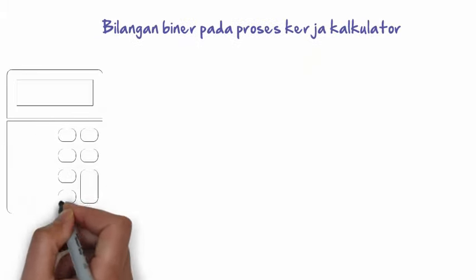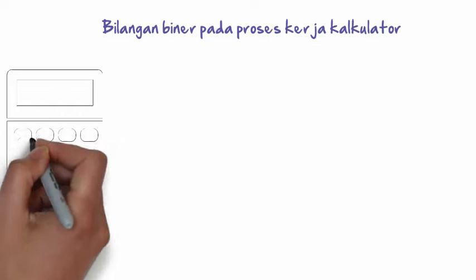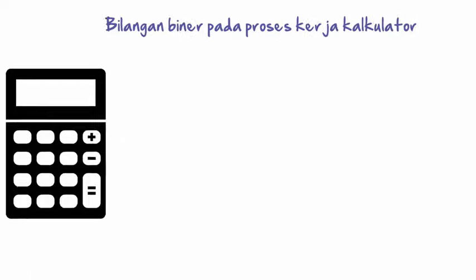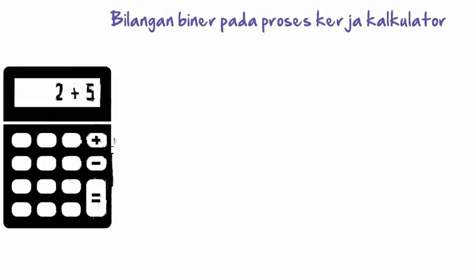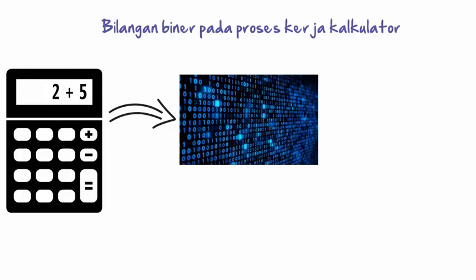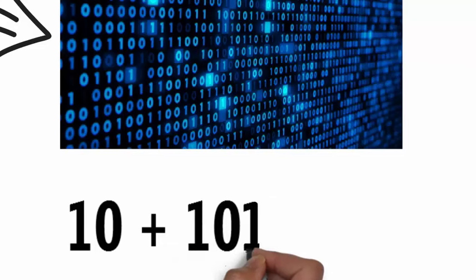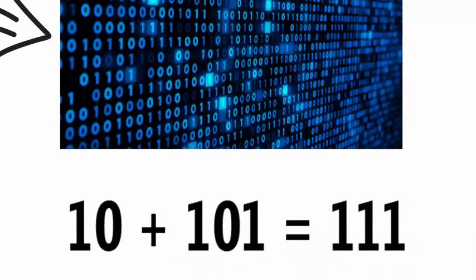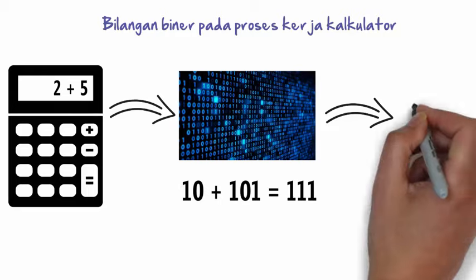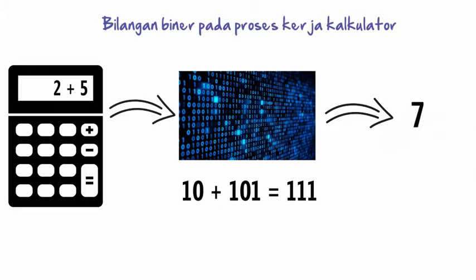The first step of the calculator is to change the decimal to binary. After the binary process, the result will be changed back to decimal to show the result of the calculation.